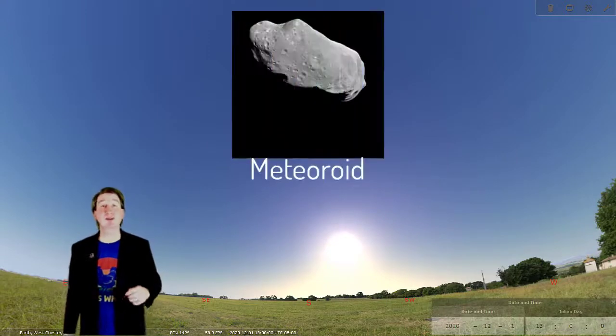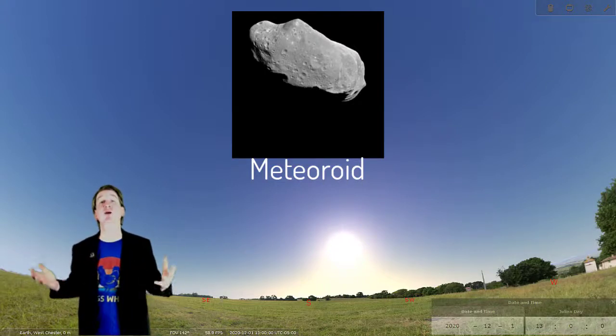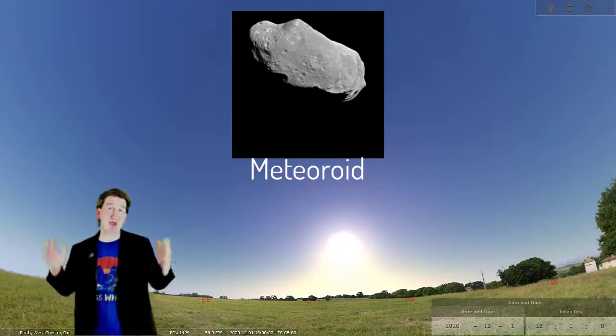A meteoroid is a small piece of ice or rock in space. These are typically about the size of a grain of sand or dust, up to about the size of a small boulder about a meter across.